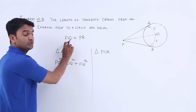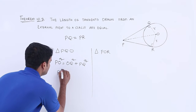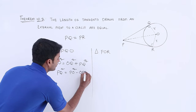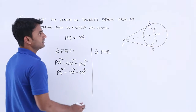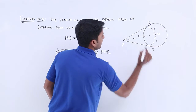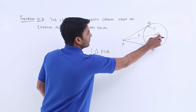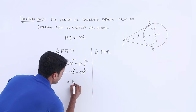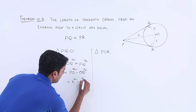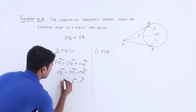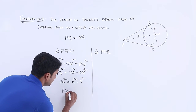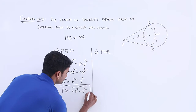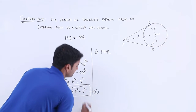We need to find the value of PQ. Rearranging: PQ squared is equal to PO squared minus OQ squared. Let us take PO as h and OQ as r. Substituting these values, we get PQ squared equals h squared minus r squared, so PQ is equal to the square root of h squared minus r squared. Let us call this Equation 1.